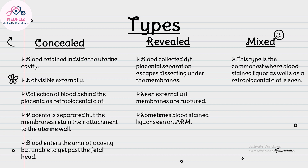There are three categories of placental abruption: concealed, revealed, and mixed. In the concealed type, blood is retained inside the uterine cavity and is not visible externally; blood collects behind the placenta as a retroplacental clot, and the placenta is separated but membranes remain attached. In the revealed type, blood collected due to placental separation escapes by dissecting under the membranes and is seen externally if membranes are ruptured. The mixed type is the commonest, where both blood-stained liquor and a retroplacental clot are seen.